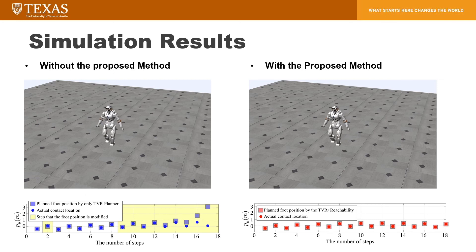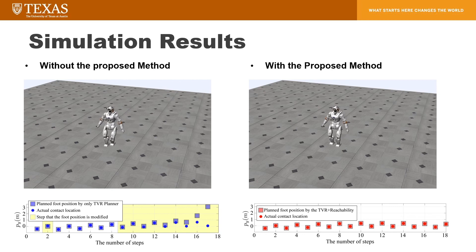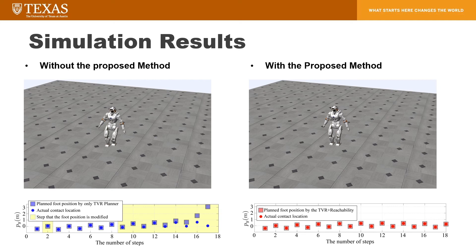These are numerical simulation results. We employ the same TBR planner and the same whole-body controller. Without the proposed method, the TBR planner produces a diverging foot location. However, the proposed method achieves more stable walking due to the optimized trajectory.